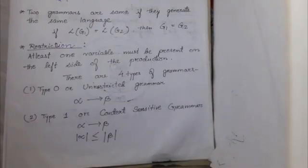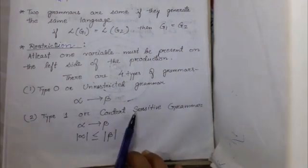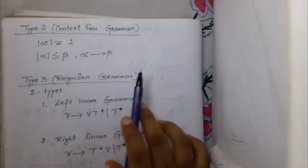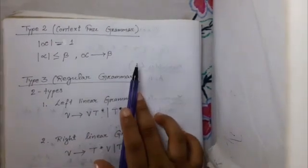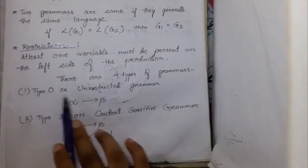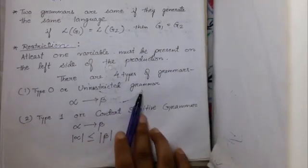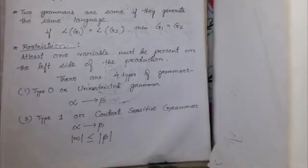There are four types of grammar: Type 0 or unrestricted grammar, Type 1 or context sensitive grammar, Type 2 or context free grammar, and Type 3 or regular grammar.